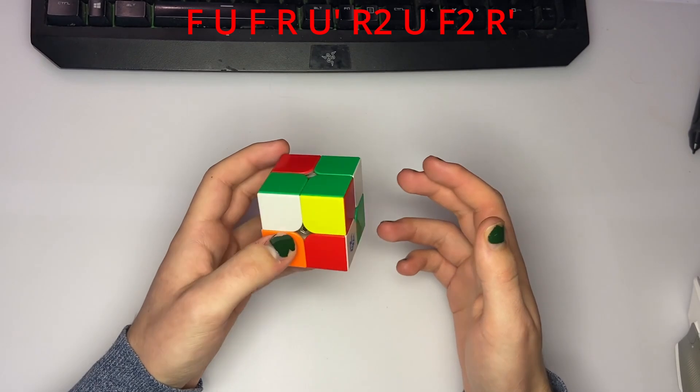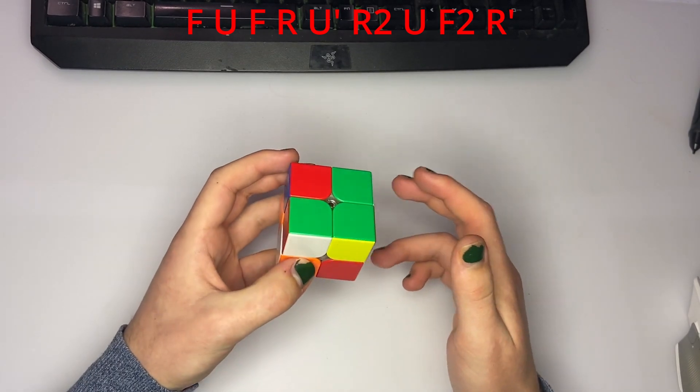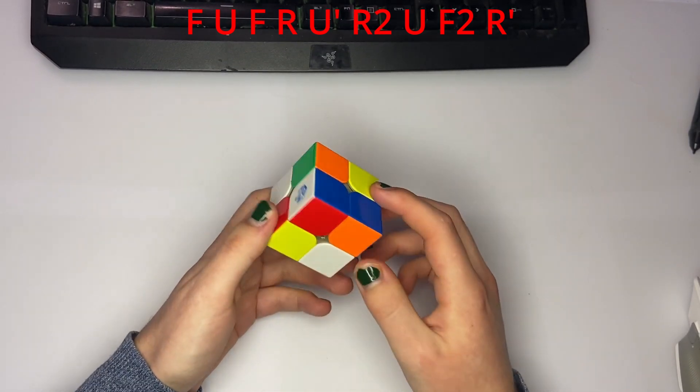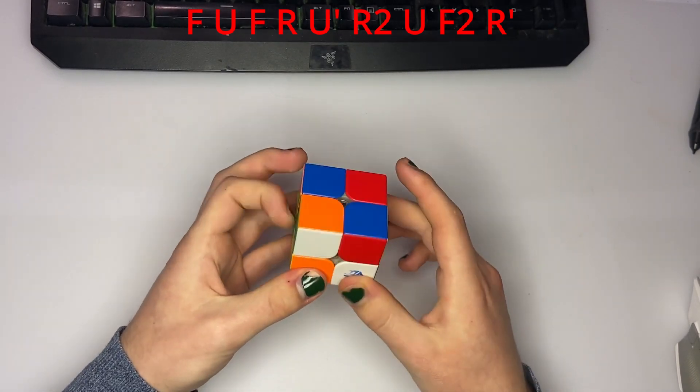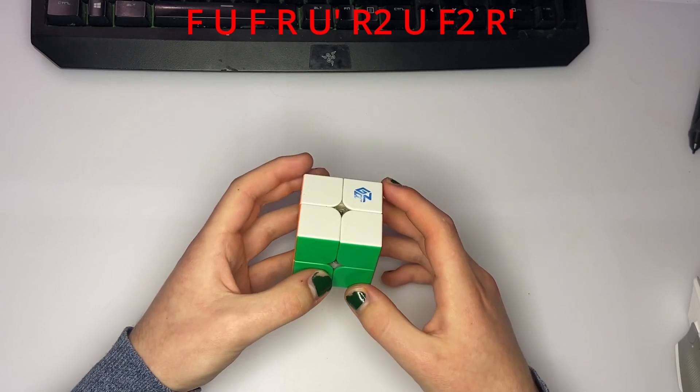Again, this is another case where this probably is not the best alg because it's not super finger trick friendly. But the best way to finger trick it is probably from this angle. And you can do this. Anyways, on to the next scramble.